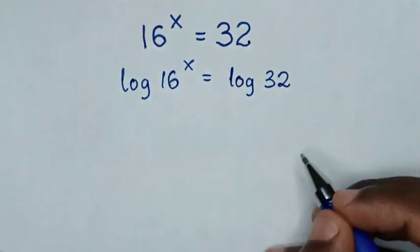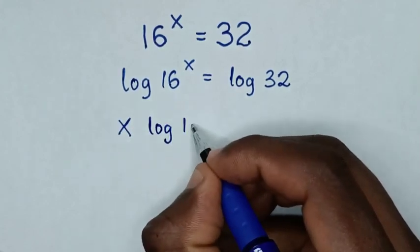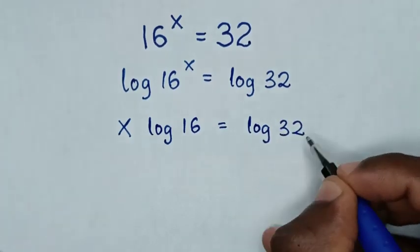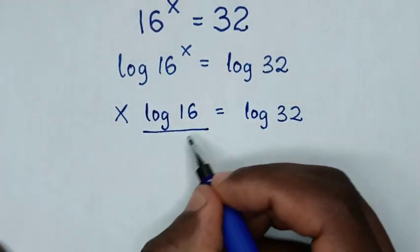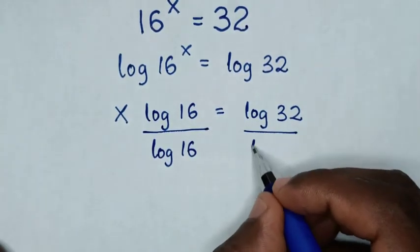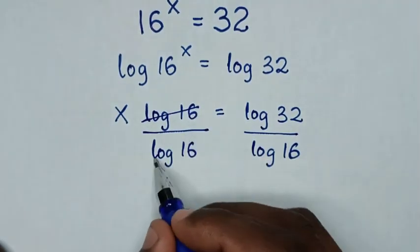Then in the next step, this power of x will move to the base, so it will be x log of 16 is equal to log of 32. Then we divide by log of 16 in both sides, so this and this will cancel.